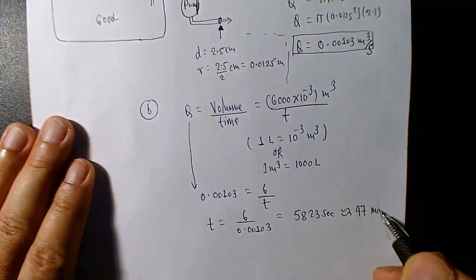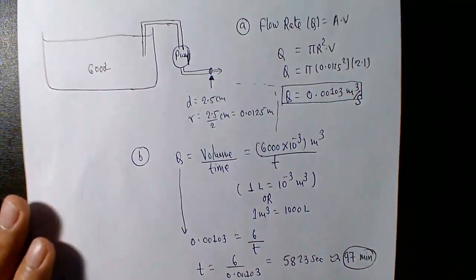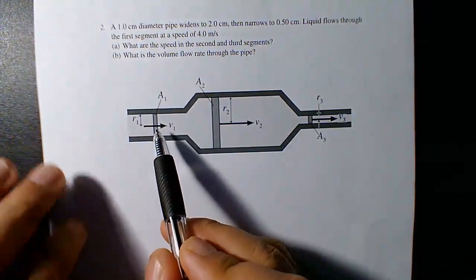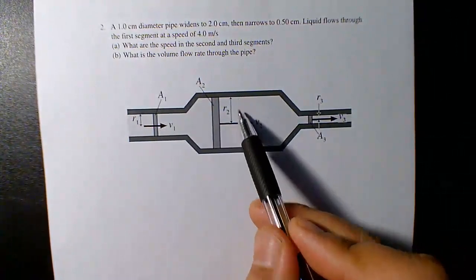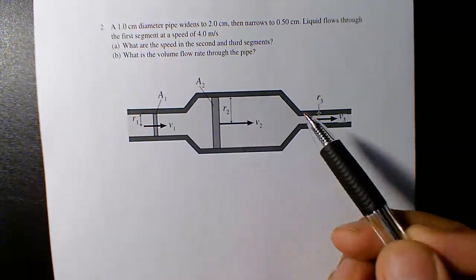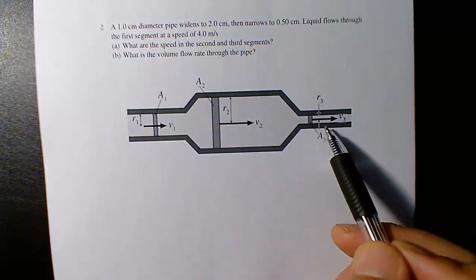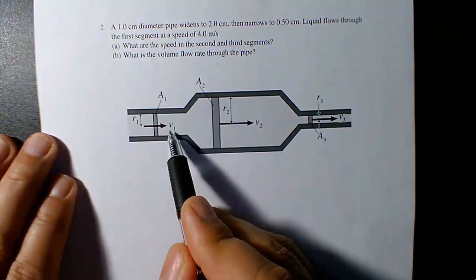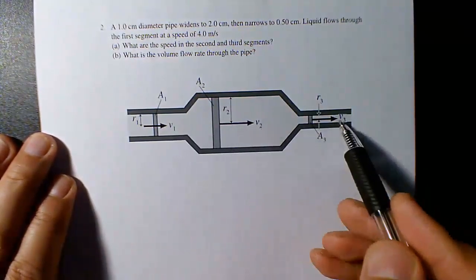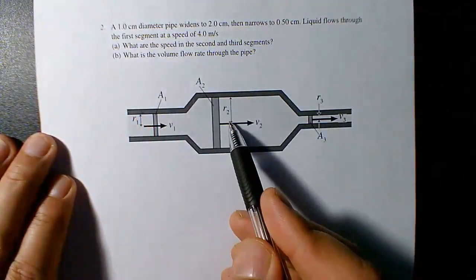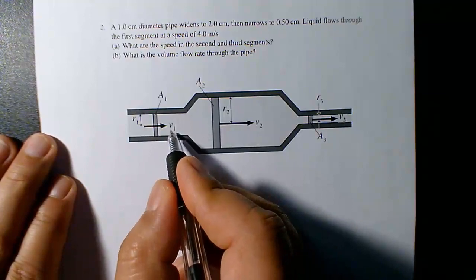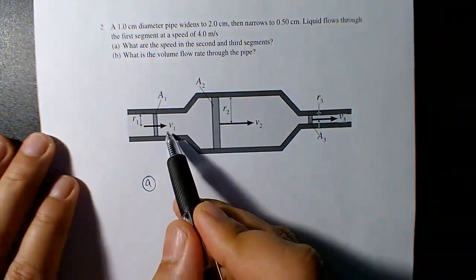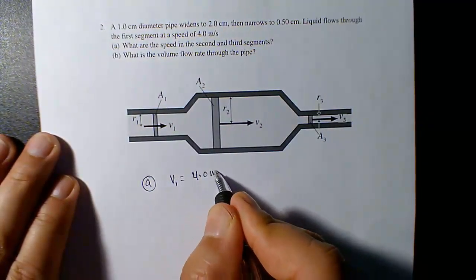The next problem: a 1 centimeter diameter pipe widens to a 2 centimeter diameter tube, then narrows to a half centimeter tube. Liquid flows through each segment with speeds v1, v2, v3. The first question asks for the speeds in the second and third segments. The speed in the first segment, v1, is given as 4 meters per second.